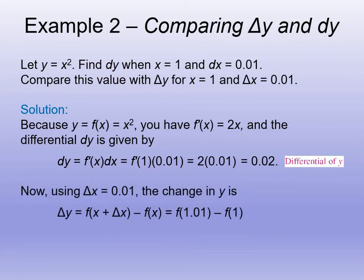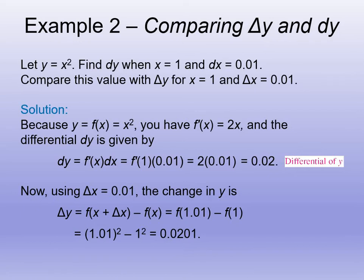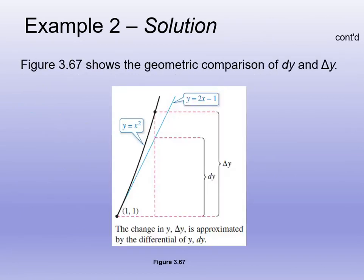Now using delta y: delta y = f(x + Δx) − f(x) = f(1.01) − f(1). Substituting into the original function: (1.01)² − (1)² = 1.0201 − 1 = 0.0201. So we can compare: dy = 0.02 versus delta y = 0.0201, showing how the differential approximates the actual change.